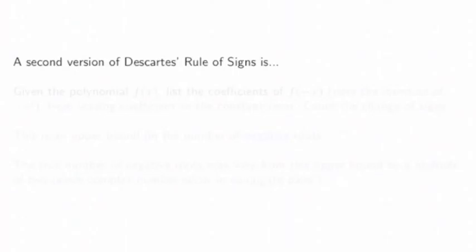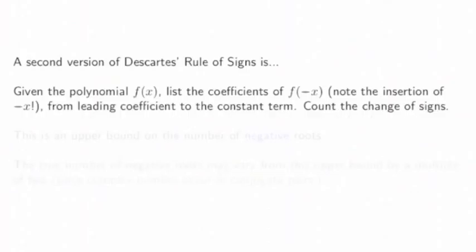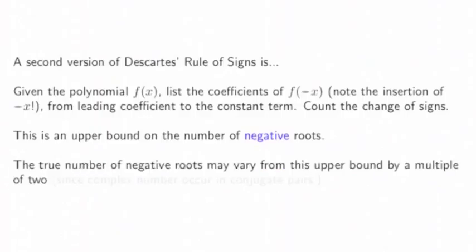A second version of Descartes' rule of signs is: given the polynomial f(x), list the coefficients of f(-x). Notice that we're plugging in -x just like we did when we tried to decide if a polynomial was even or odd. Consider the leading coefficients to the constant term and count the change of signs. This is an upper bound on the number of negative roots. The true number of negative roots may vary from this by some multiple of two because complex numbers come in pairs.